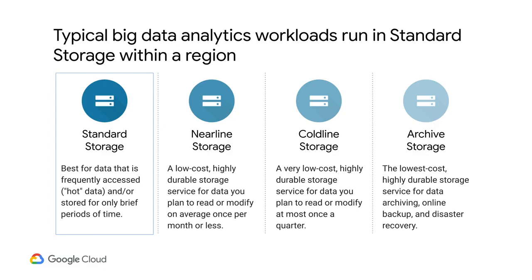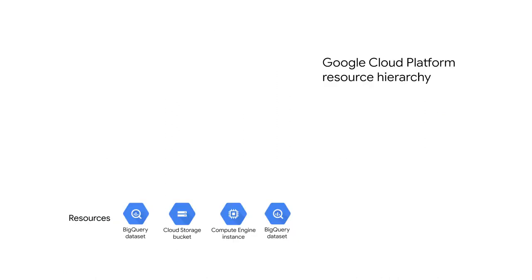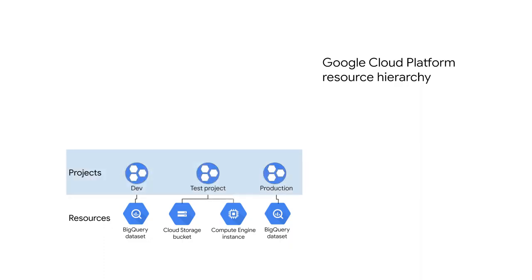Cloud storage buckets are an example of a cloud resource. Let's cover some of the account management logistics you need in order to use cloud resources. Resources — like your cloud storage bucket or Compute Engine instance — belong to specific projects. Bucket names have to be globally unique, and GCP assigns you a project ID that's globally unique too, so you can use that project ID as a unique name for your bucket. A project is a base-level organizing entity for creating and using resources and services, for managing billing, APIs, and permissions.